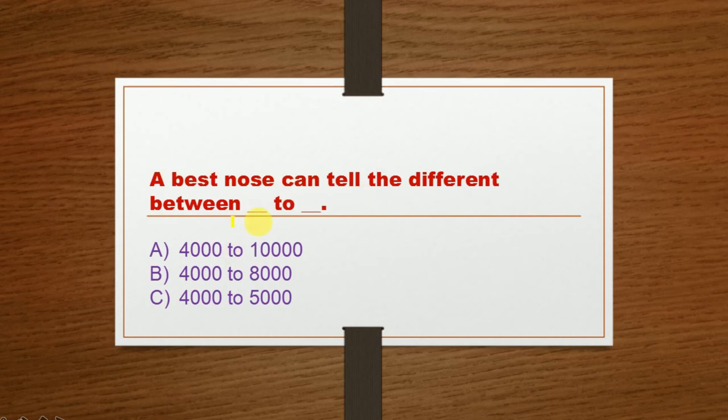Next question: The best nose can tell the difference between dash to dash smells. Option A: 4,000 to 10,000, Option B: 4,000 to 8,000, Option C: 4,000 to 5,000.